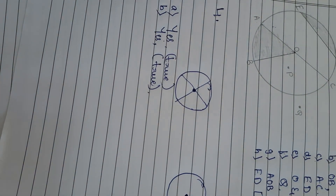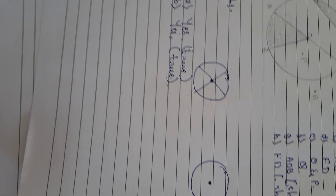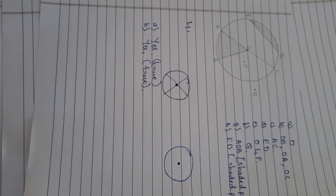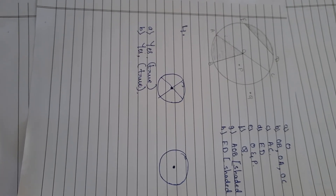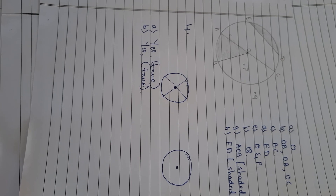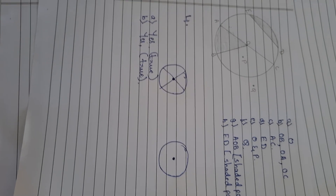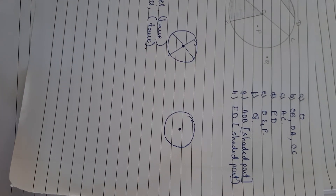Understood children. So you have to write now: first main, third main, and fourth main in your class work. Start writing children. Thank you.